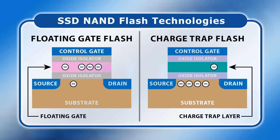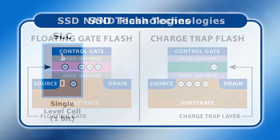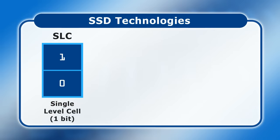After a certain number of program-erase or PE cycles, it becomes impossible for the cell to reliably function. The practical implication is that all SSDs can only sustain a limited number of data write operations before they fail. The technology in the first SSDs was called Single Level Cell or SLC, storing just one bit of data per memory cell, requiring only two possible states: fully programmed or fully erased. Today most SSDs store multiple bits of data per memory cell to increase drive capacity at reduced cost, which reduces the number of PE cycles an SSD can reliably sustain and also makes the drive operate more slowly. When purchasing an SSD, you may wish to consider how many bits of data it stores per memory cell, as this determines its speed and life expectancy.